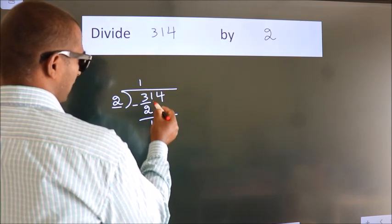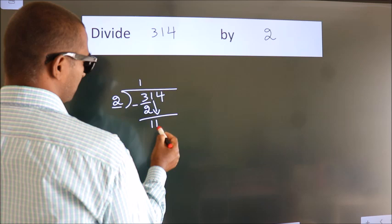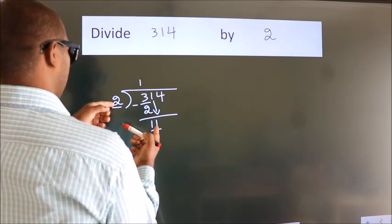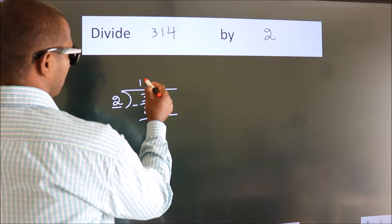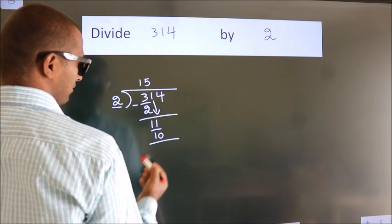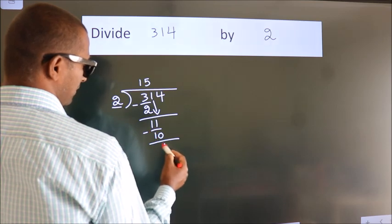Bring down the beside number. So, 1 down. So, 11. A number close to 11 in the 2 table is 2 5s 10. Now, we subtract. We get 1.